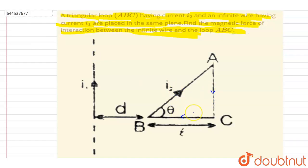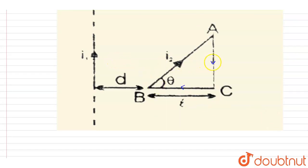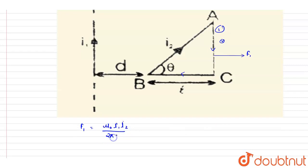So if you see this is the loop ABC, the current direction in this loop is as shown. For the AC wire, the magnetic field will be the same throughout, so you can find the force of interaction directly. The magnetic field here will be in the downward direction, and if you do l cross B you will get the force direction. We know the interaction force formula — this force f1 equals mu naught i1 i2 divided by 2 pi times (d plus l).